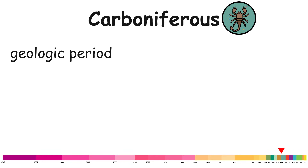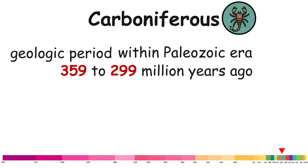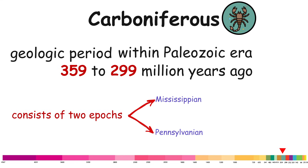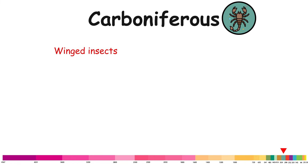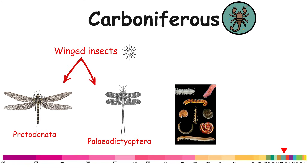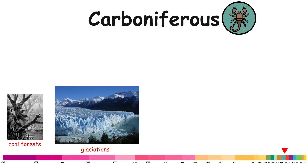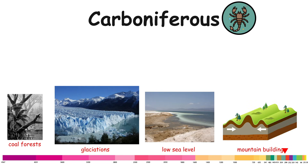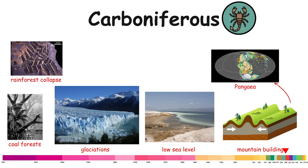Carboniferous. The Carboniferous is a geologic period within the Paleozoic era, spanning approximately from 359 to 299 million years ago. It consists of two epochs: Mississippian and Pennsylvanian. The period is sometimes called the Age of Amphibians, due to the diversification of early amphibians such as the Temnospondyls. Some winged insects radiated suddenly, especially Protodonata and Paleodictyoptera, as well as some millipedes and scorpions became very large. First coal forests appeared. The later half of the period experienced glaciations, low sea level, and mountain building, as the continents collided to form Pangaea. The Carboniferous rainforest collapse occurred at the end of the period.